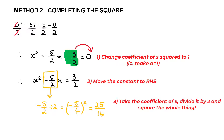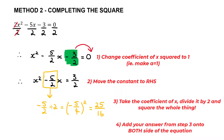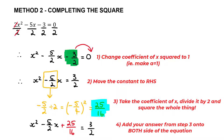Because we're dealing with an equation, what we do to one side we must do to the other. So for step four, we take 25/16 and add it to both sides. We now have x² − (5/2)x + 25/16 = 3/2 + 25/16.